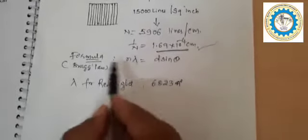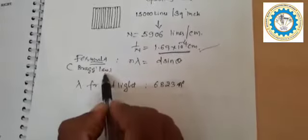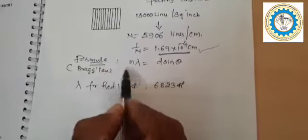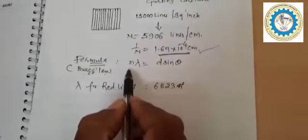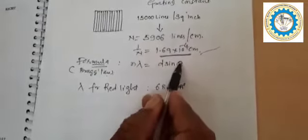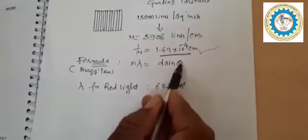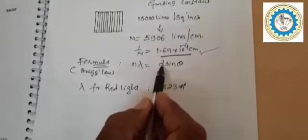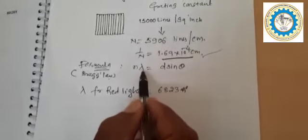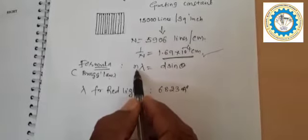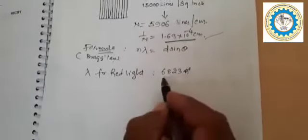To find the wavelength, we use the formula called Bragg's law. The Bragg's law formula is: n lambda equals D sine theta. Here, theta is the angle of deviation, D is the grating constant, lambda is the wavelength, and n is the order — first order, second order, and so on.